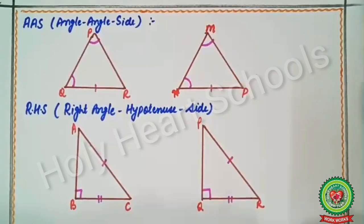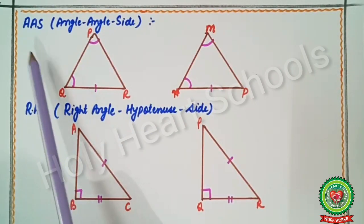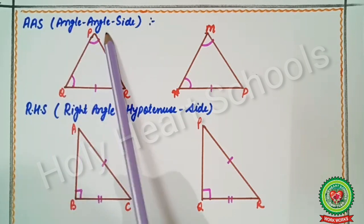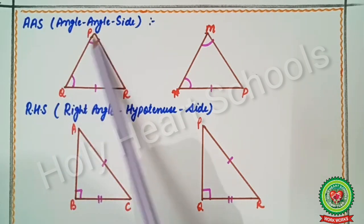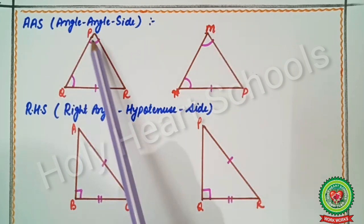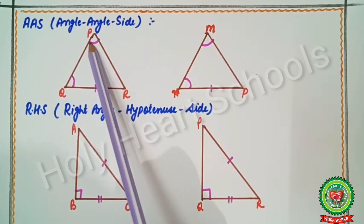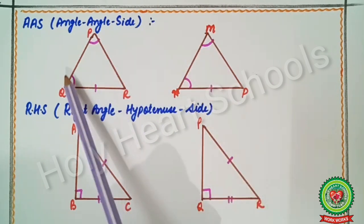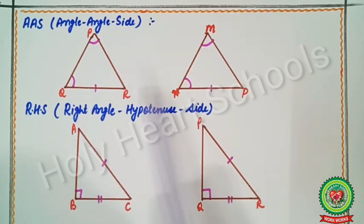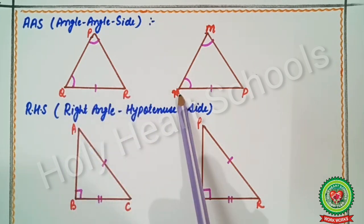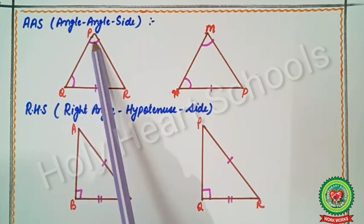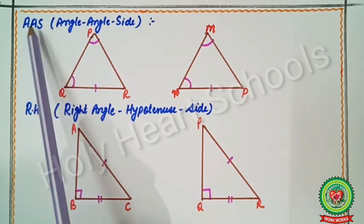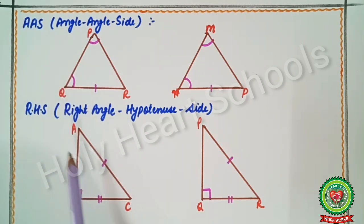Next is AAS — Angle Angle Side. In triangles PQR and MNP, if angle P = angle N, angle Q = angle N, and side QR = side NP, then we have taken angle, angle, then side. This test is called AAS — Angle Angle Side.